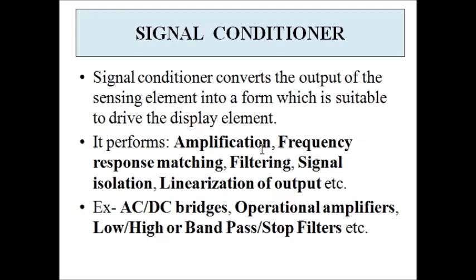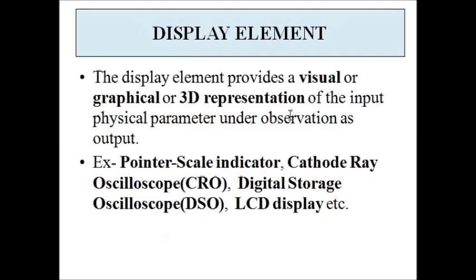The signal conditioner performs these tasks so that we get an output which can be interfaced easily with the display element. Examples of signal conditioners include operational amplifiers used for amplification of signals; AC/DC bridges which convert resistance, inductance, and capacitance changes into voltage or current signals; and low-pass, high-pass, band-pass, and band-stop filters used for filtering noise and distortion signals.